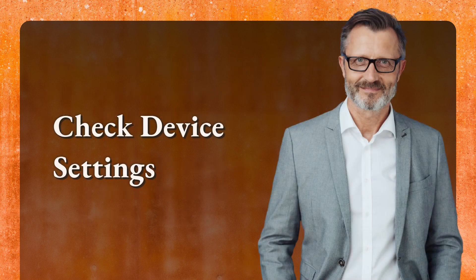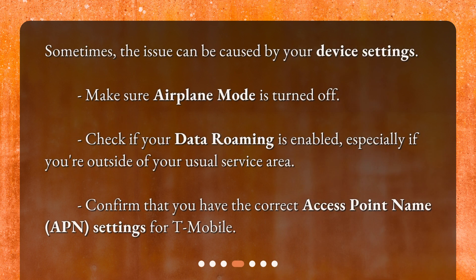Check your device settings. Sometimes the issue can be caused by your device settings. Make sure Airplane Mode is turned off. Check if your data roaming is enabled, especially if you're outside of your usual service area. Confirm that you have the correct Access Point Name (APN) settings for T-Mobile.